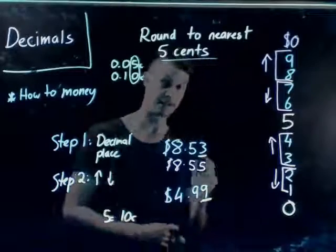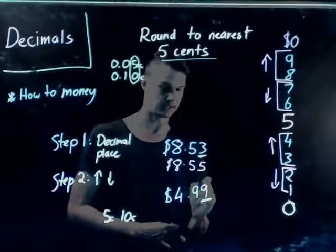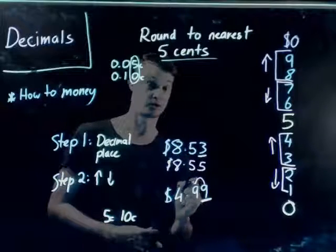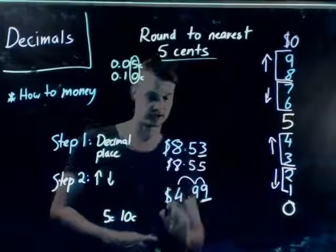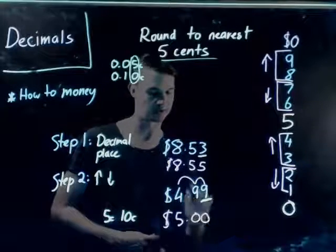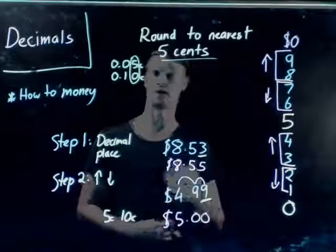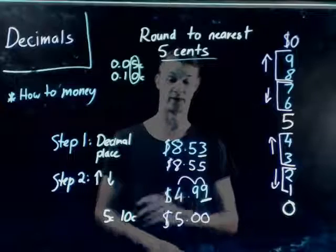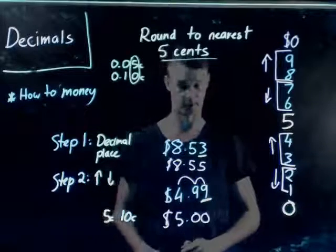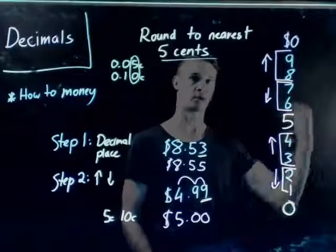Now, what if we have a nine? Nine needs to round up to the nearest dollar, but that causes a carry — so the digit before it also raises, and we keep carrying until we reach a number we can settle on. In this case, four dollars and ninety-nine cents rounds up to five dollars. That's how we round with money.